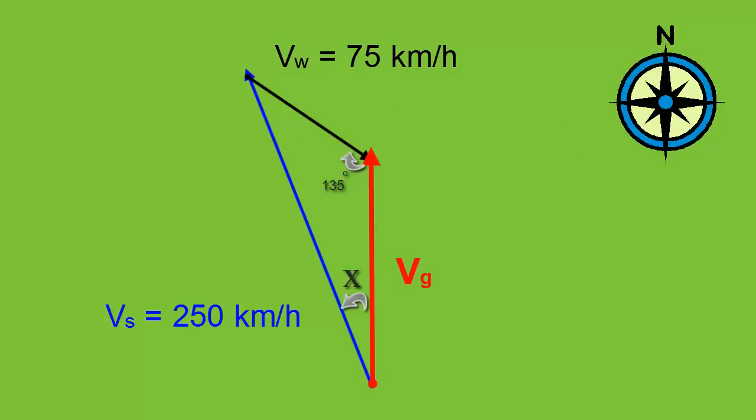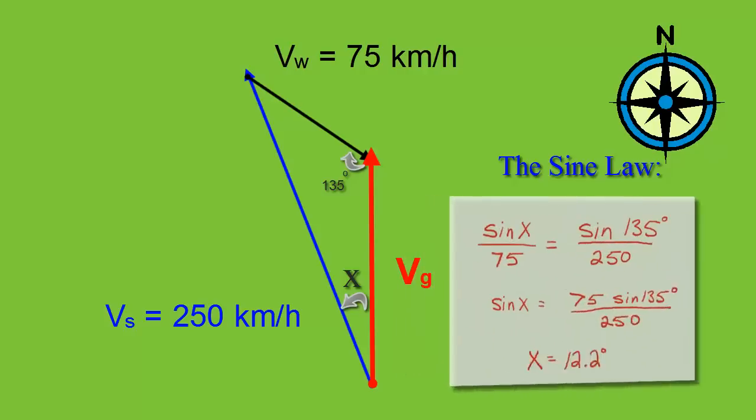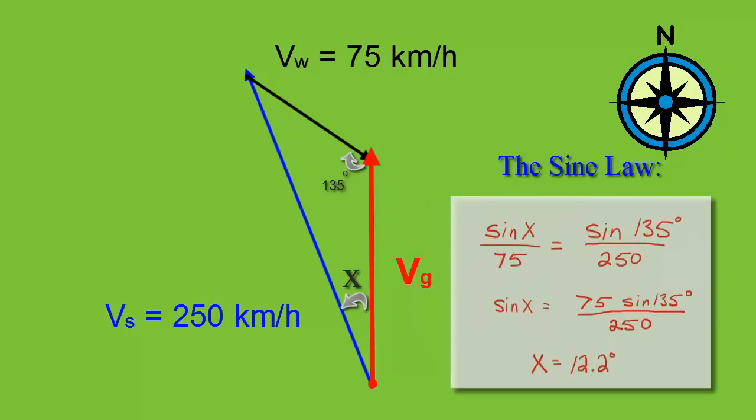The original question asked what angle to point the plane at so it ends up going straight. To do this, we use the sine law. We arrange it as sine x over its opposite side equals sine 135 over its opposite side, and solve for theta to get 12.2 degrees.